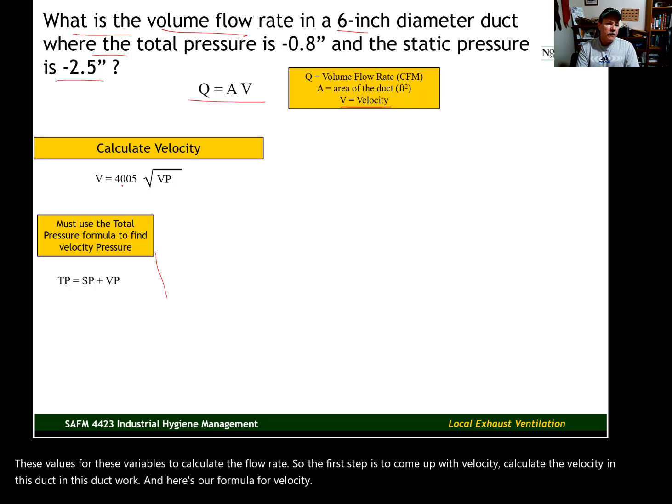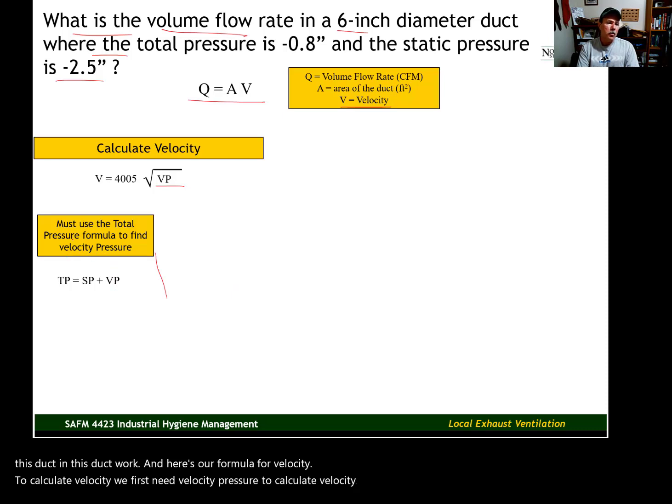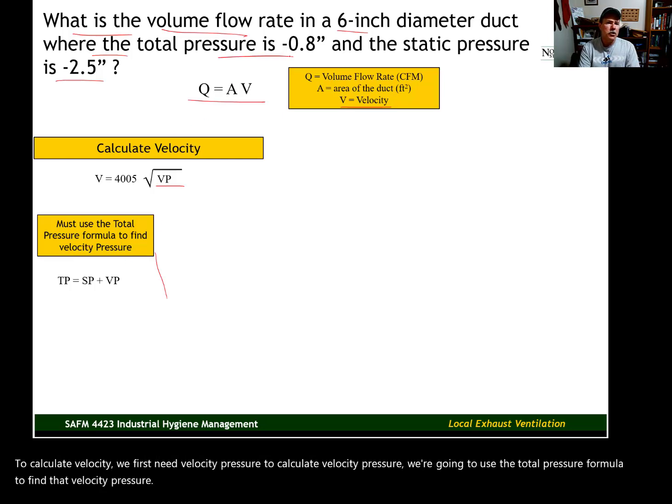To calculate velocity, we first need velocity pressure. To calculate velocity pressure, we're going to use the total pressure formula to find that velocity pressure. Okay, we are given total pressure and static pressure.